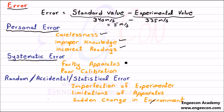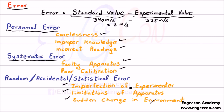The next one is random, accidental, or statistical error, which arises due to imperfection of the experimenter, limitations of the device or operators, and certain changes in the environment — for example, temperature, pressure, humidity, etc.